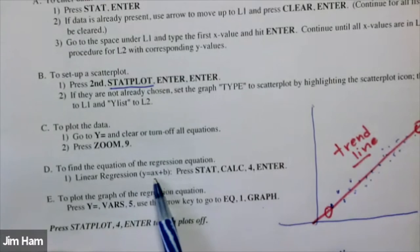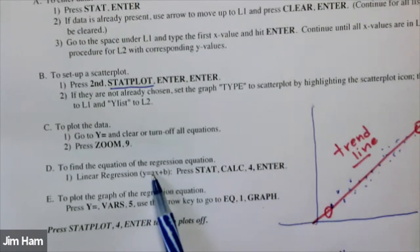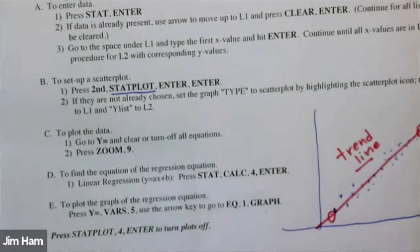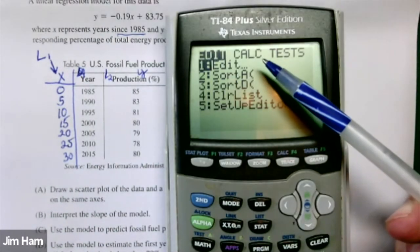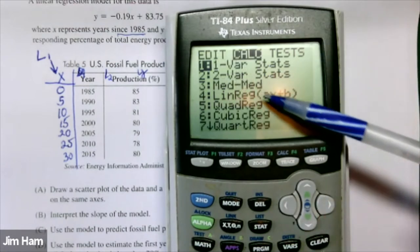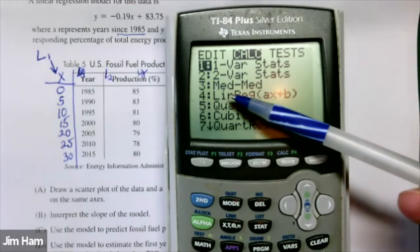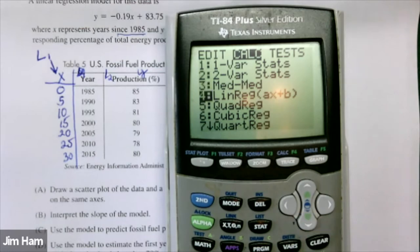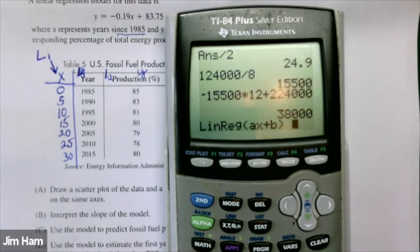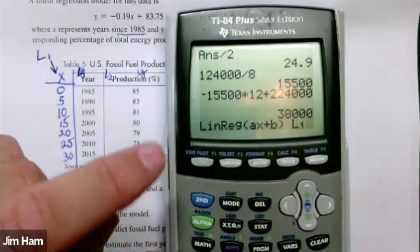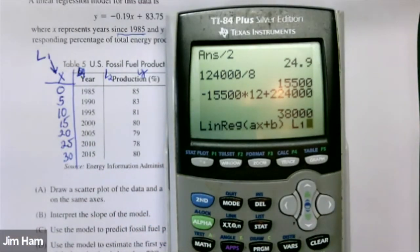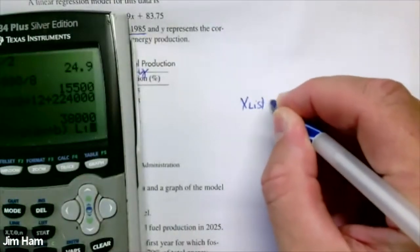Now we're going to generate the equation y equals ax plus b. The a is the number in front of x — that's the slope — and b is the y-intercept. The calculator uses a instead of m, and that's fine. We're going to go back to stat and move over to calculate. The option we want is the one that looks like ax plus b — this is the linear regression. Go down to linear regression. Some of you may have newer calculators that give you a menu. You want the x list to be L1.